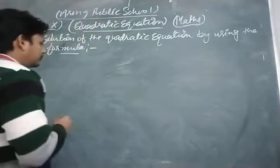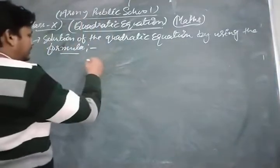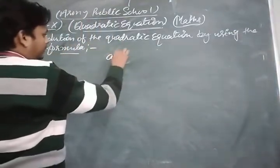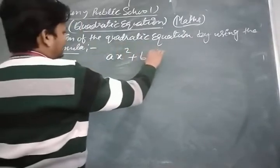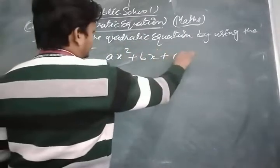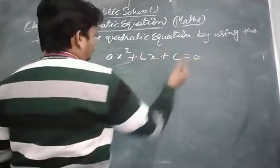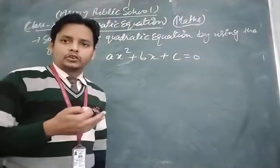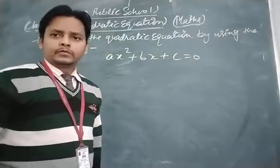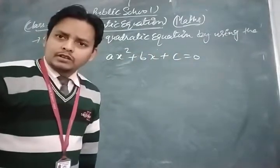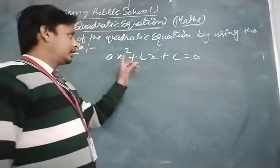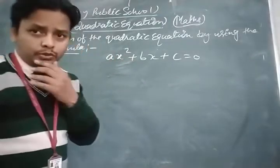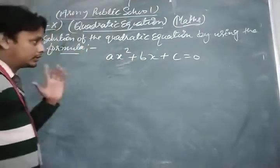Let us consider we have a quadratic equation ax² + bx + c = 0. This is the standard form, also called the general form, of the quadratic equation. It is called quadratic because the highest degree of the variable is 2.